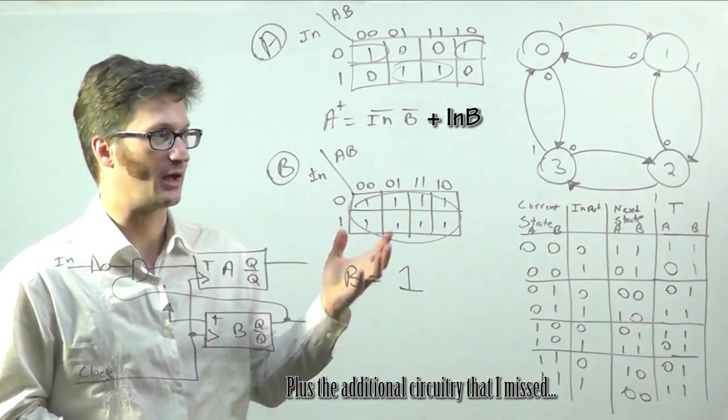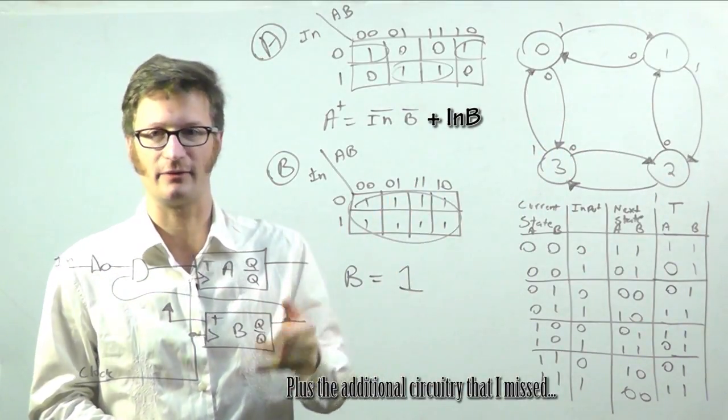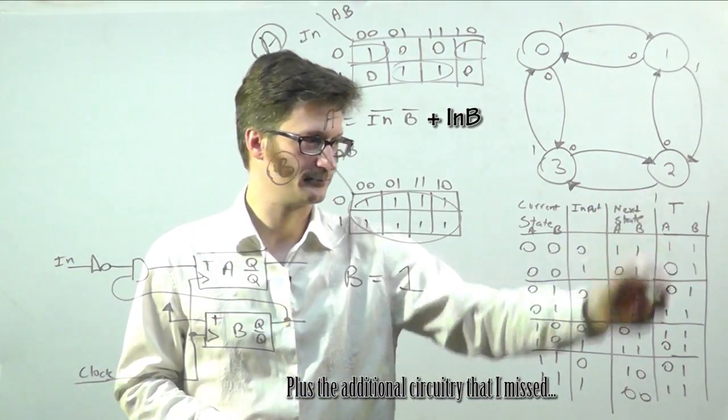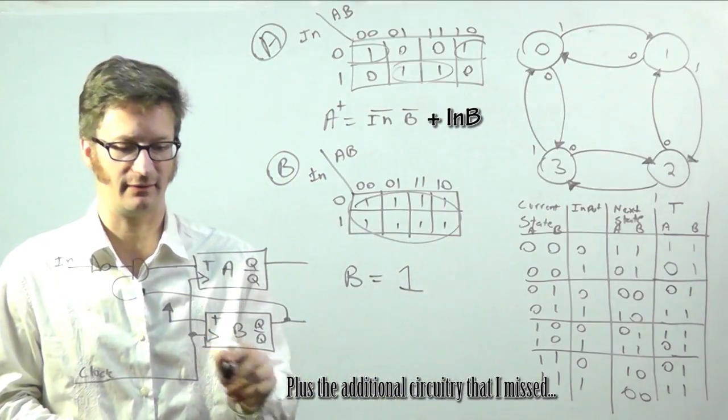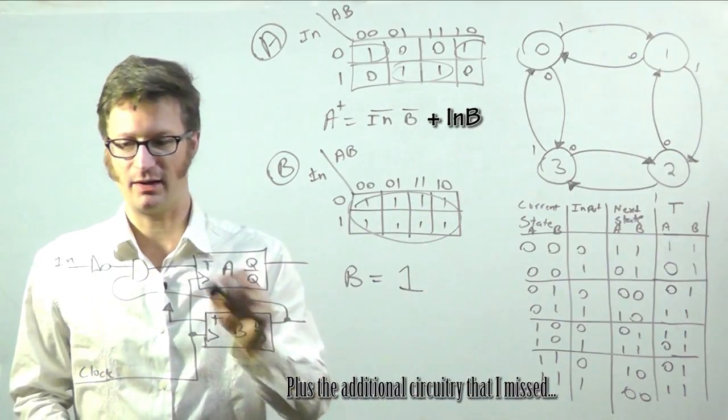And I don't have any output here other than the state itself. But if I had outputs, I would just create another column there, do my Karnaugh map for that and create the circuitry for that based on A, B and my input.